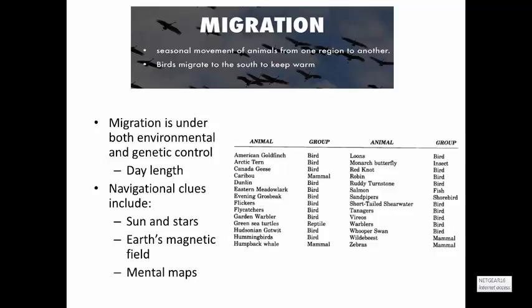Migration is a very complicated and interesting ecological behavior. In an animal behavior class, we would spend several weeks on it. The key point here is that migration is under both environmental and genetic control. The main environmental cue is day length, probably followed by temperature, which signal that it's time to migrate. For navigation — getting from point A to point B — animals use celestial cues such as the sun and stars, the Earth's magnetic field, and even inherent genetic mental maps.